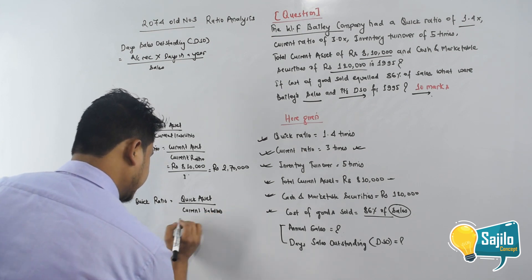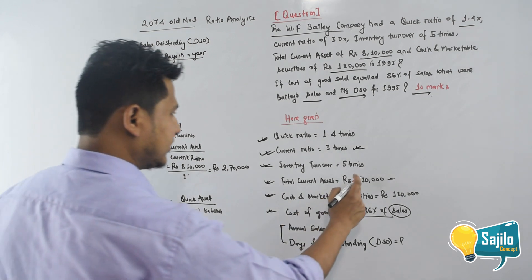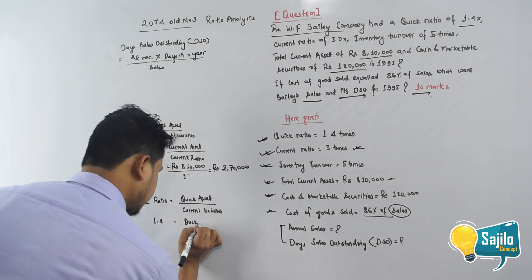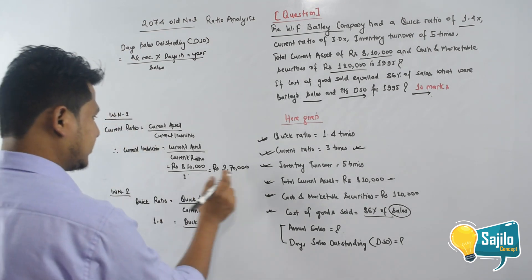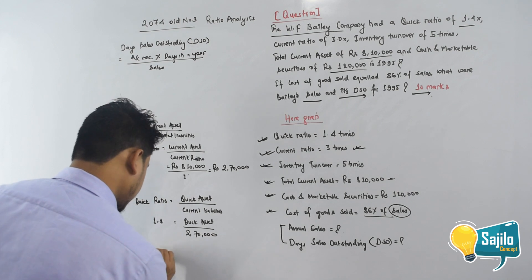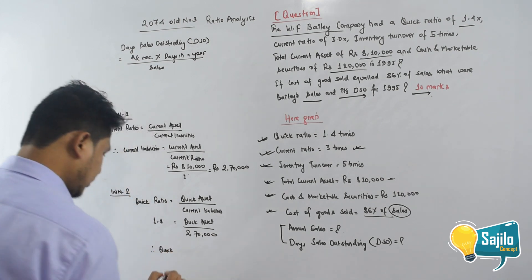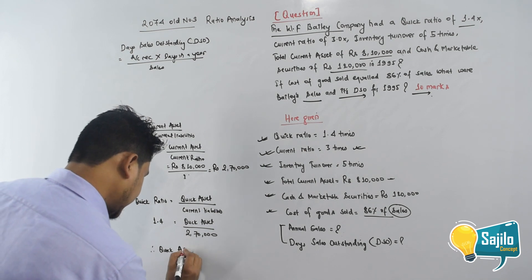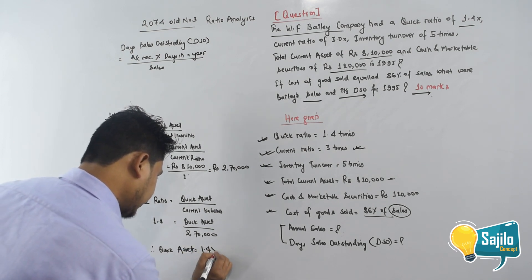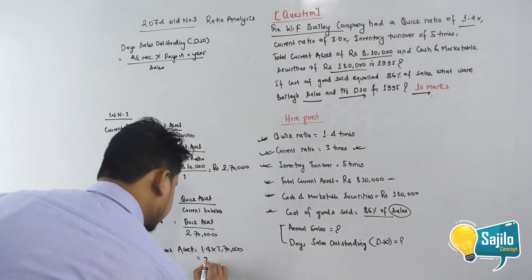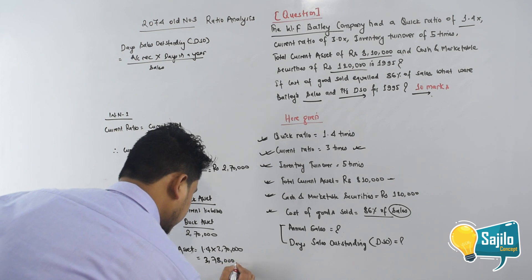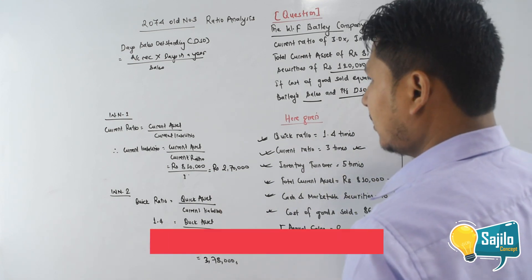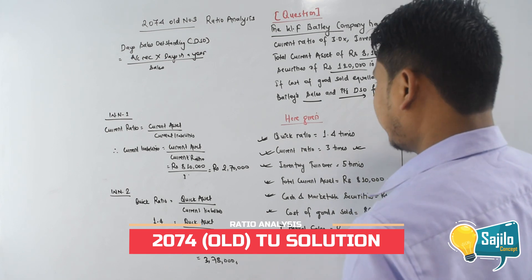Working Note number 2: Quick ratio = Quick assets divided by Current liabilities. Quick ratio is 1.4 times and Current liabilities is 2,70,000, so Quick assets = 1.4 × 2,70,000 = 3,78,000.